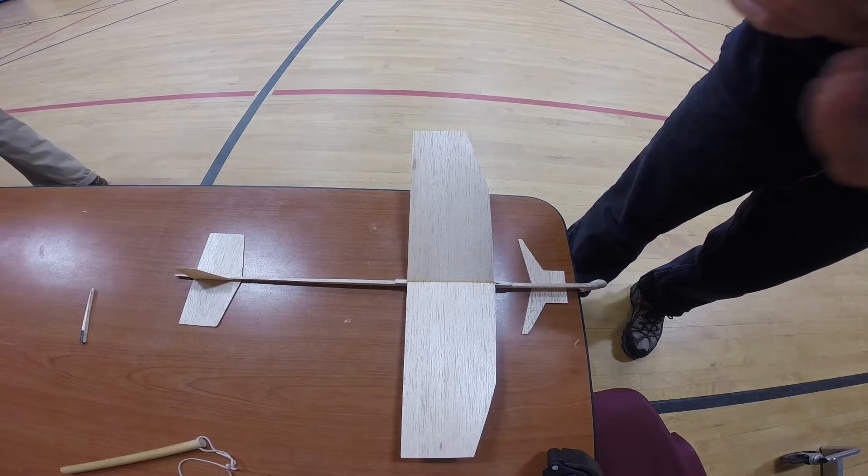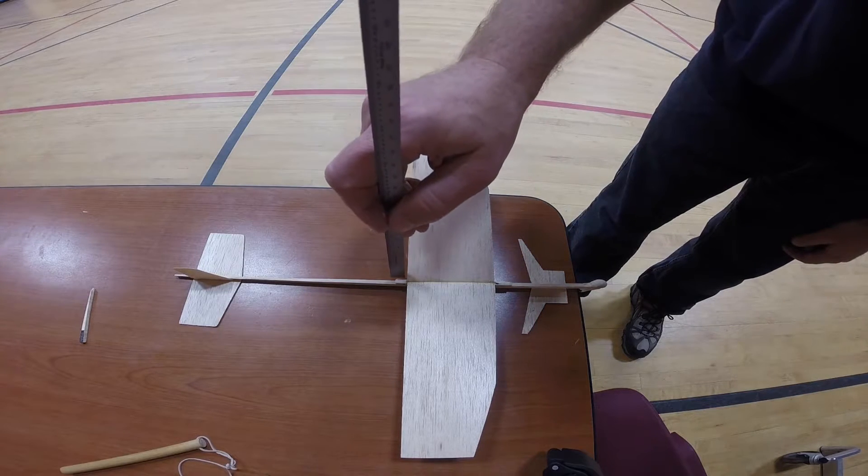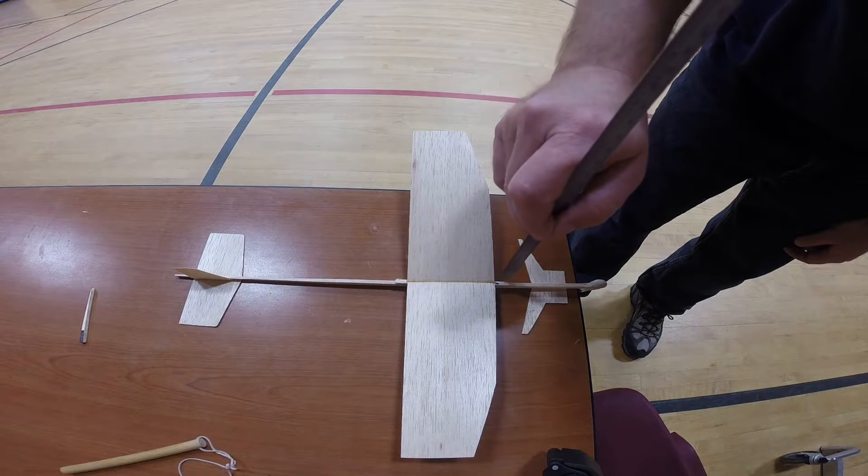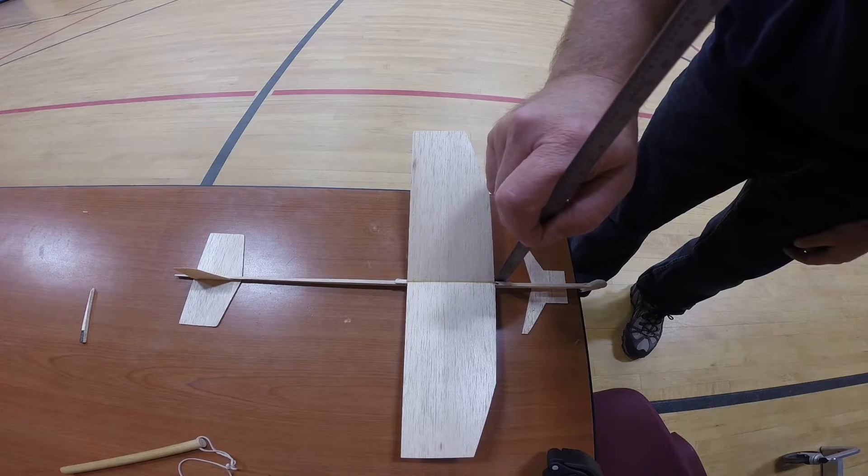If these are not parallel to each other, remove either the wing or horizontal stabilizer, sand or shim, and re-glue it to achieve a zero decklage angle.